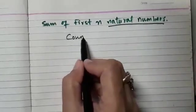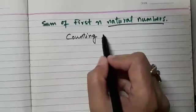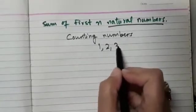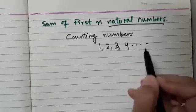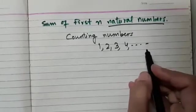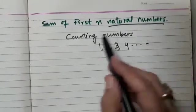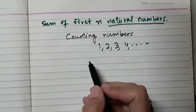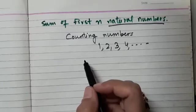Counting numbers of the type 1, 2, 3, 4, and so on are called natural numbers. So here what we have to do is we need to see what will be the sum of first n natural numbers.